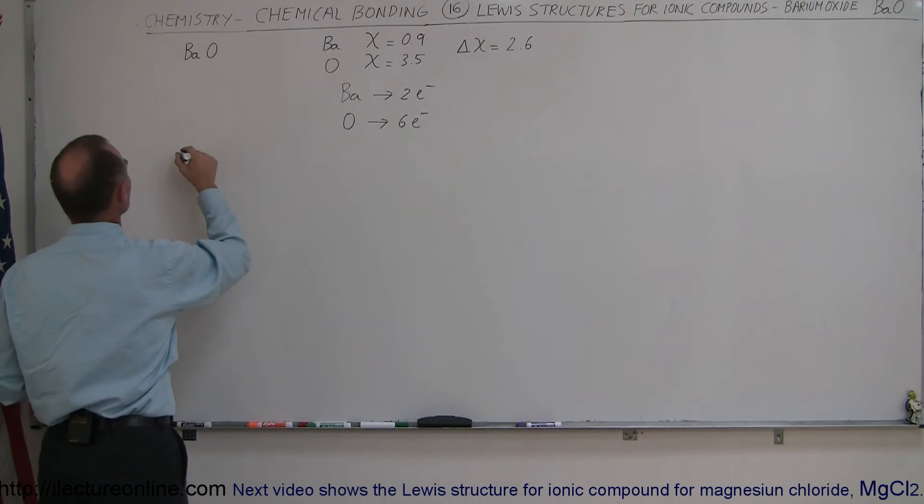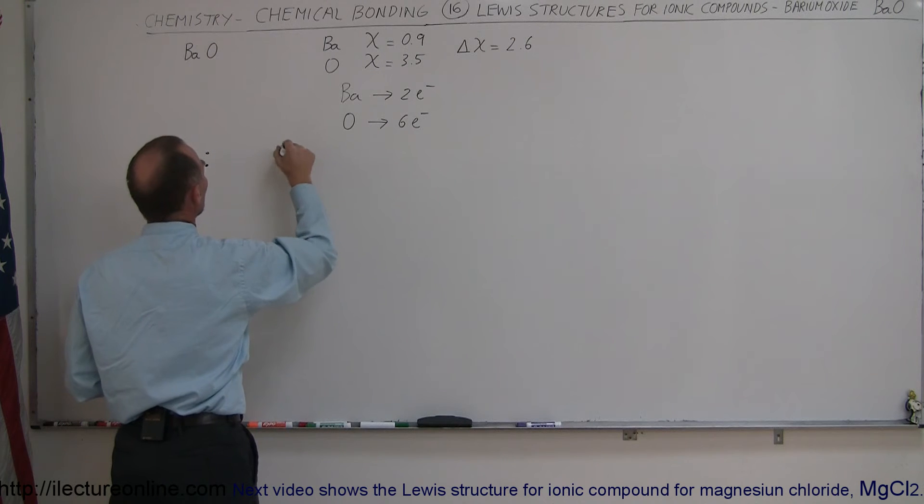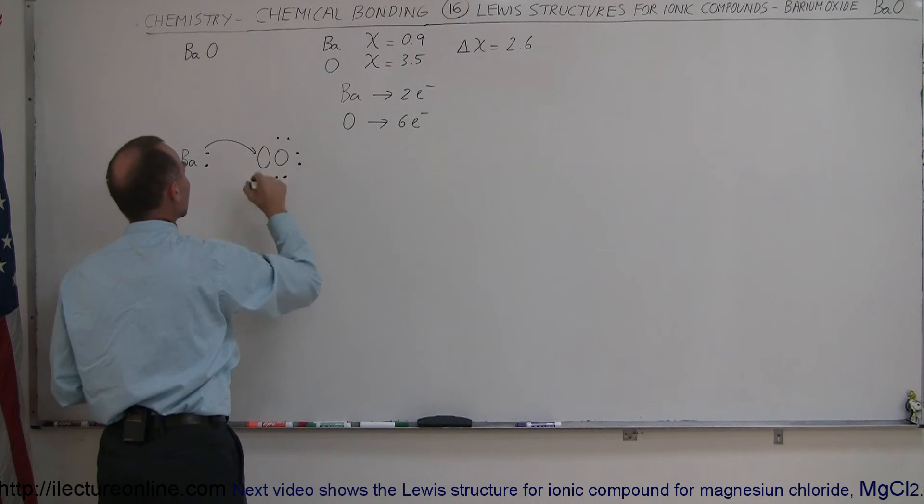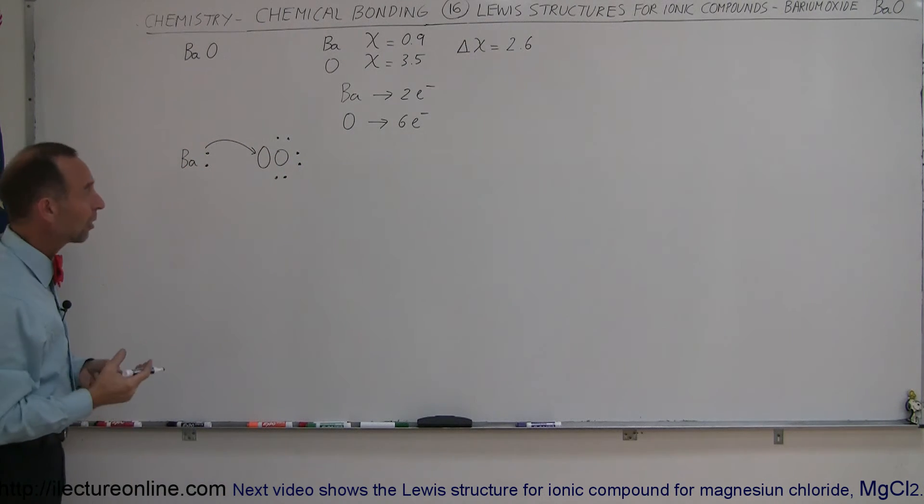So what we expect to see is this: we have a barium atom which has two valence electrons, and we have an oxygen atom which has six valence electrons, which means there is room for two additional electrons. So those two electrons are probably going to be donated to oxygen.